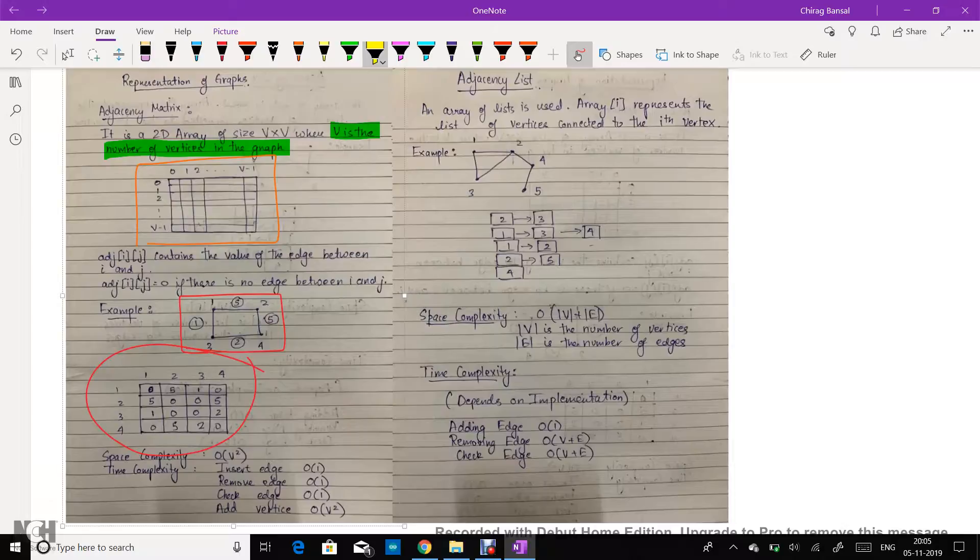Let's look at its complexities. Its space complexity is order v square as there are v square number of data which is stored. Time complexity for inserting an edge is order 1. For removing an edge it is order 1. For checking an edge it is order 1.